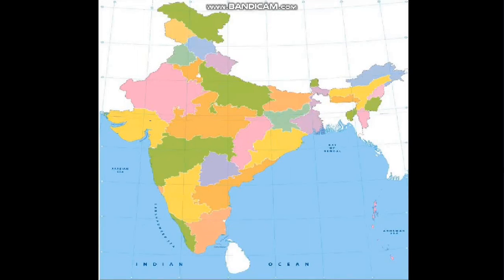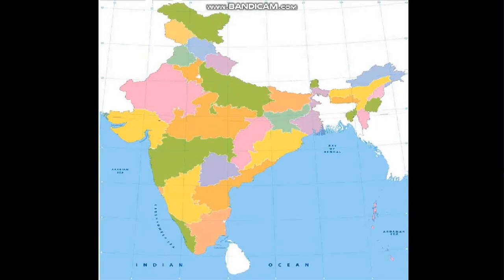The next state is Karnataka. Karnataka is also a southern state. It is famous for its natural, cultural and architectural heritage. Bengaluru is its capital and it is the IT hub of India. It is also known as the Garden City of India due to its wide range of gardens and parks. Mangaluru is an Arabian seaport and major commercial center. Mysore is another important city with rich cultural heritage.